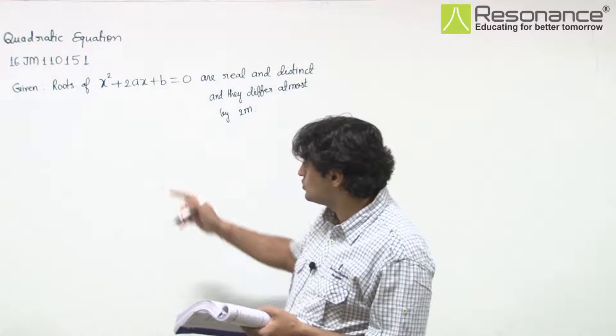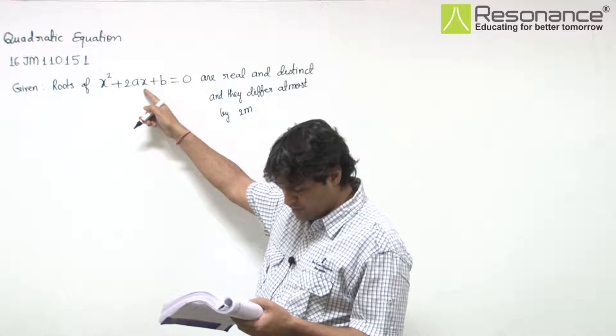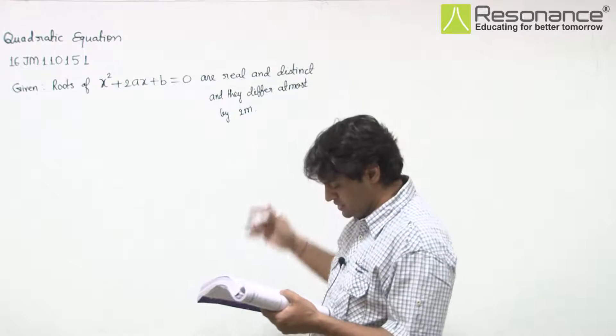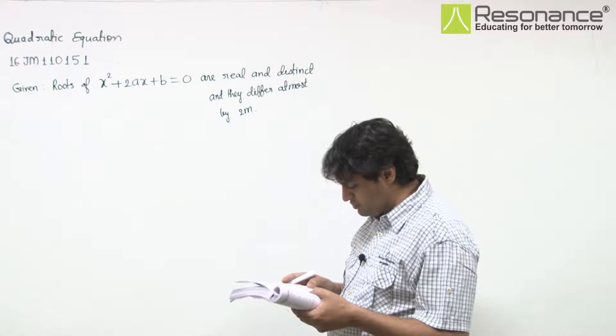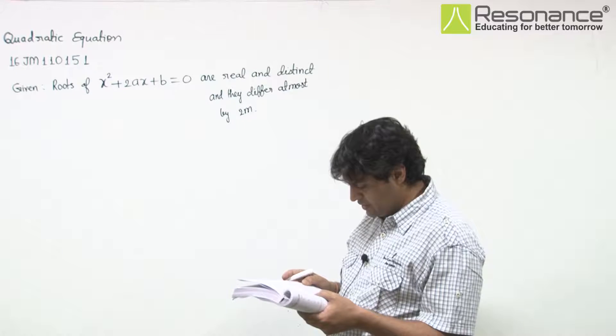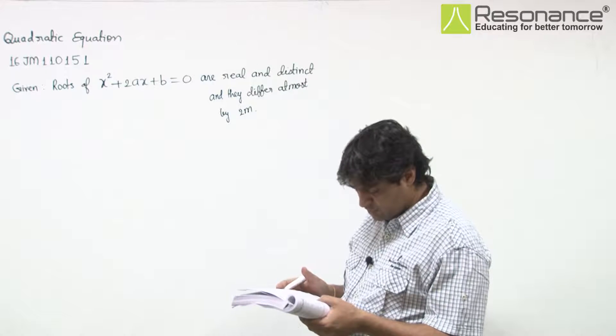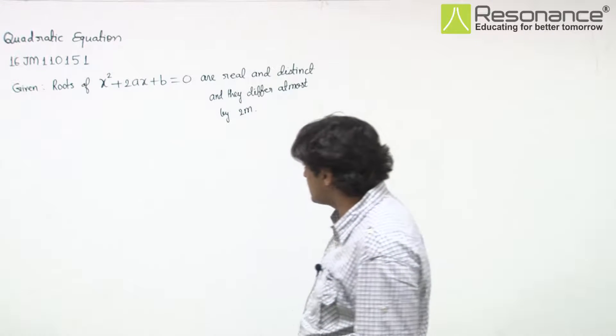In this question, we are given that roots of the equation x² + 2ax + b = 0 are real and distinct, and they differ by at most 2m. Then b lies in an interval, so you have to find out the interval.